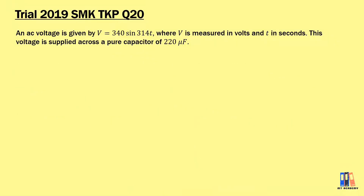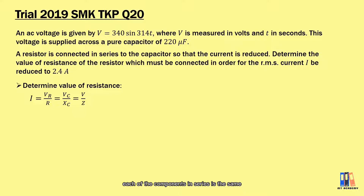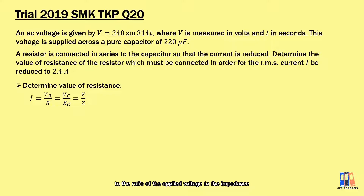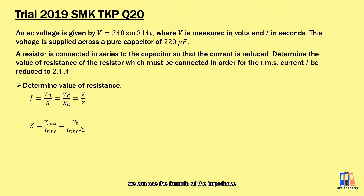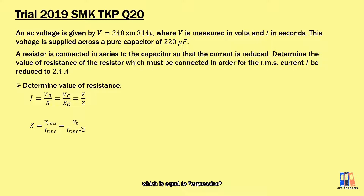Continuing the question, we are given a resistor connected in series to the capacitor to reduce the current to 2.4 amperes RMS. The current flowing through each component in a series circuit is the same — equal to VR/R, or VC/XC, or the ratio of the applied voltage to the impedance. To find the value of the resistance, we use the formula of impedance equal to the ratio of voltage to current. Note that the peak voltage and the RMS current are given, so either convert the voltage or the current. You can derive that impedance Z equals V₀ divided by √2 × I_RMS.